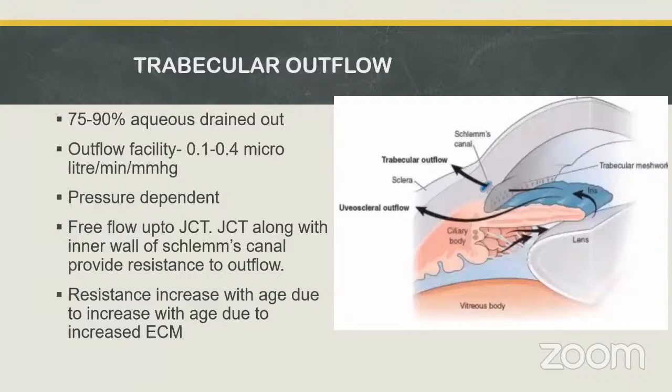In uveoscleral outflow, aqueous passes through the ciliary body into the suprachoroidal space and exits through the venous circulation of the ciliary body, sclera, and orbit. Trabecular outflow forms the majority — 75 to 90% of aqueous is drained through this pathway. The outflow facility is about 0.1 to 0.4 microlitres per minute per mmHg and it is a pressure-dependent pathway. Free flow occurs up to the juxtacanalicular trabecular meshwork, which offers maximum resistance to outflow, and this resistance increases with age due to increased extracellular matrix.